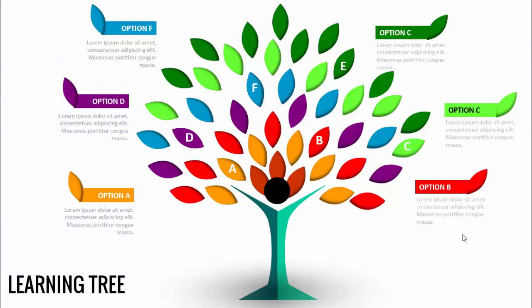In today's tutorial I'm going to show you how to make this beautiful six-option learning tree infographic slide in PowerPoint. I've added a silhouette or icon of a person, and then it has all the different leaves of different colors. I've added options A, B, C, D, E, and F, and you can add some detailed text for each option.